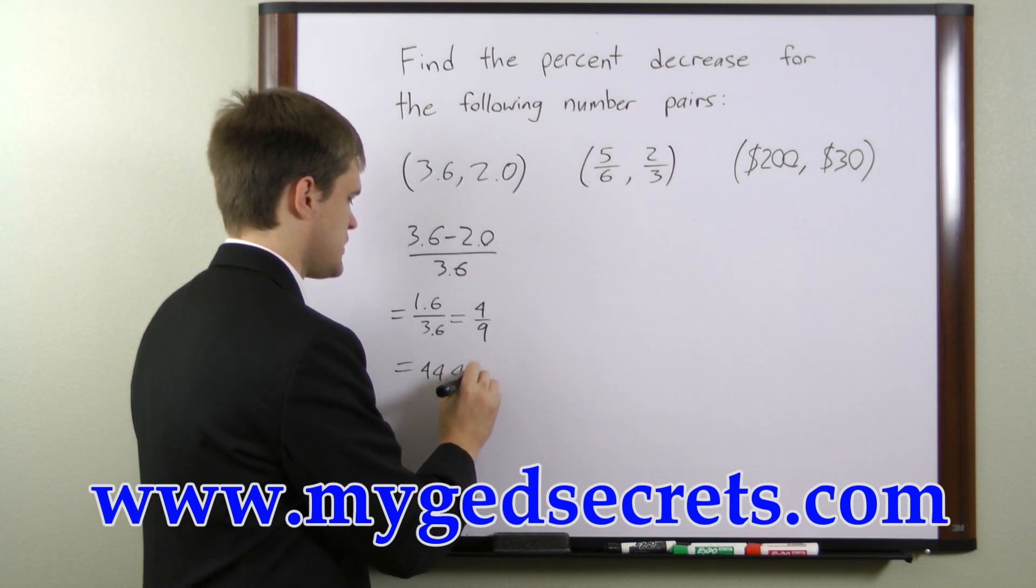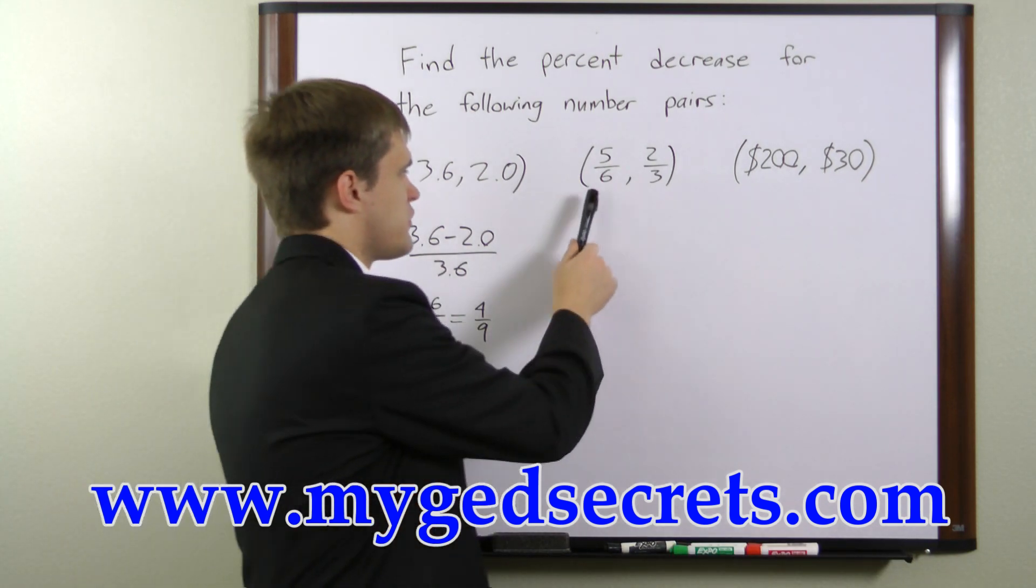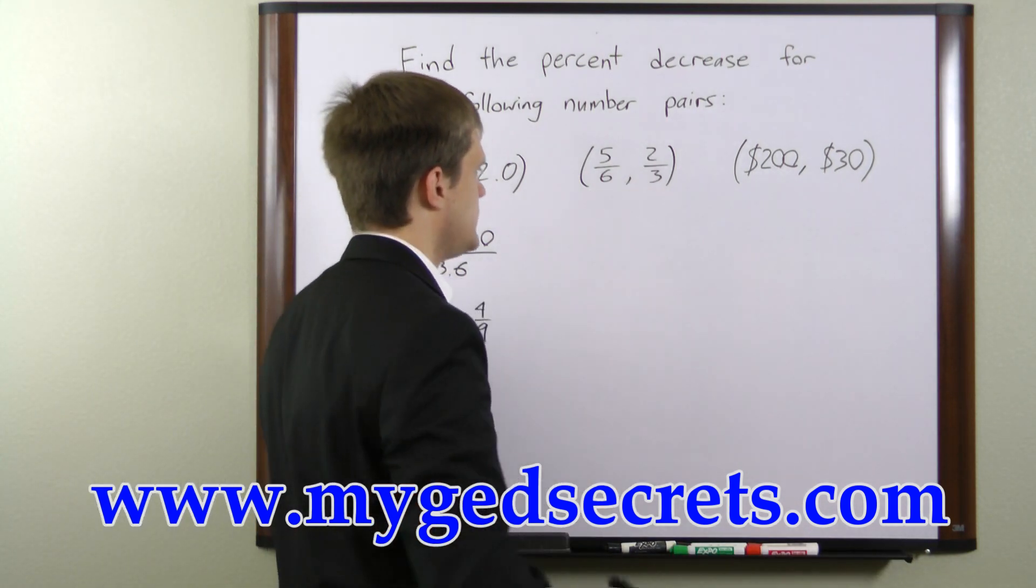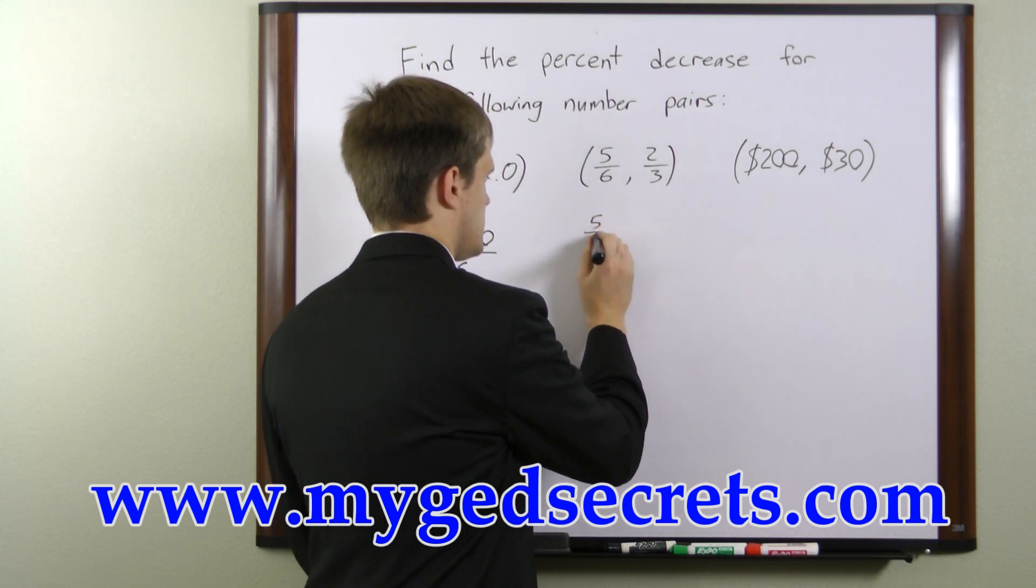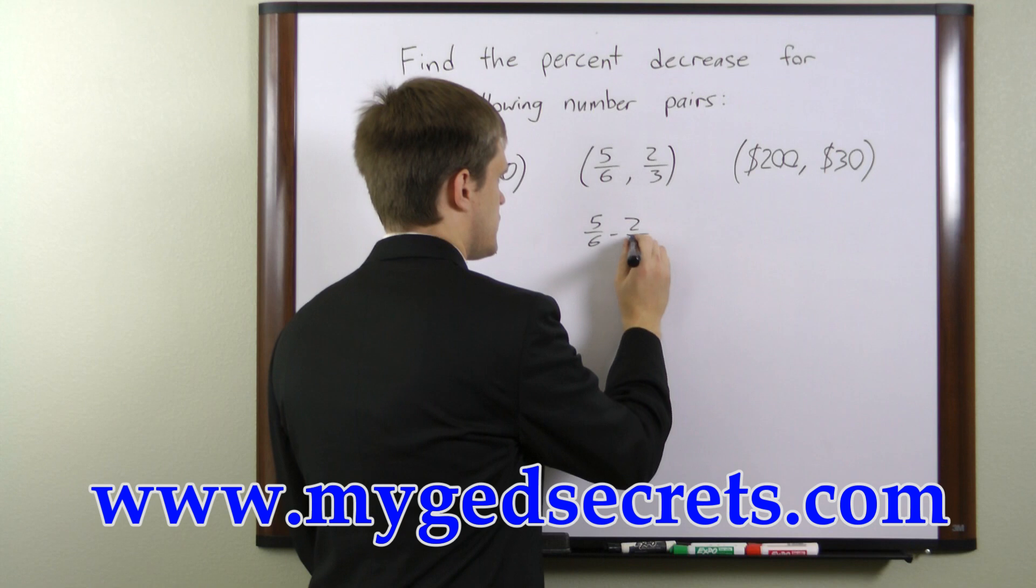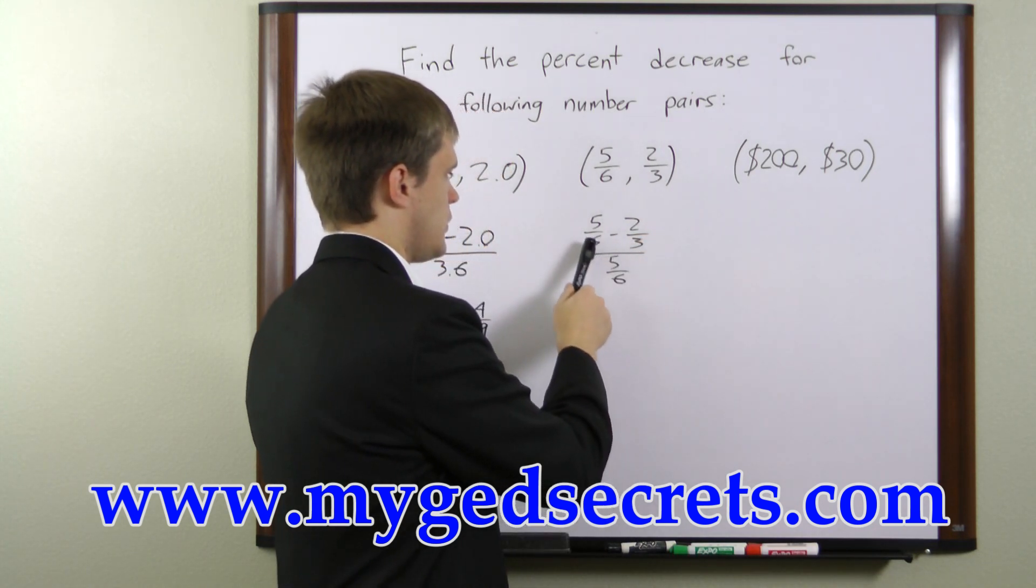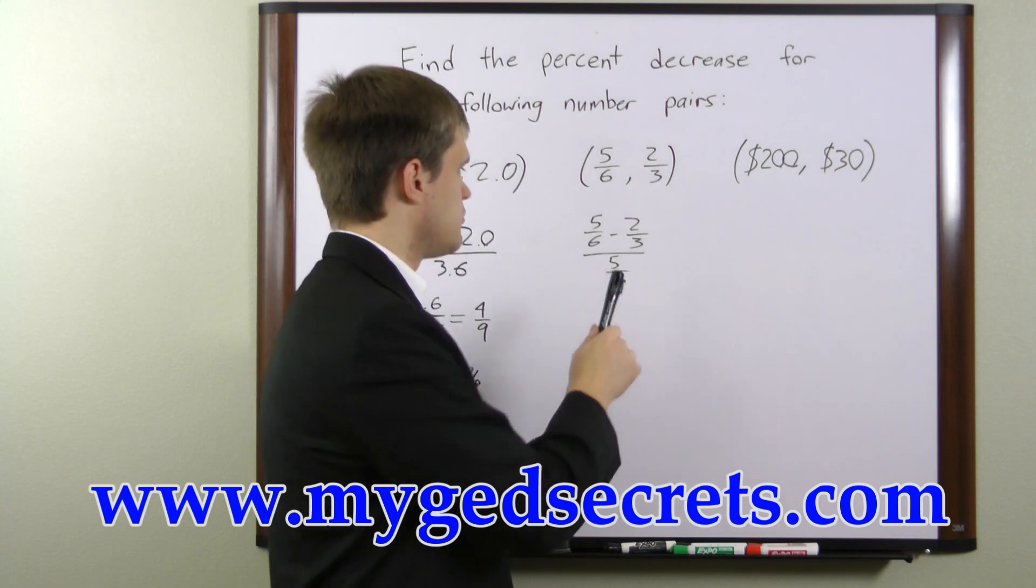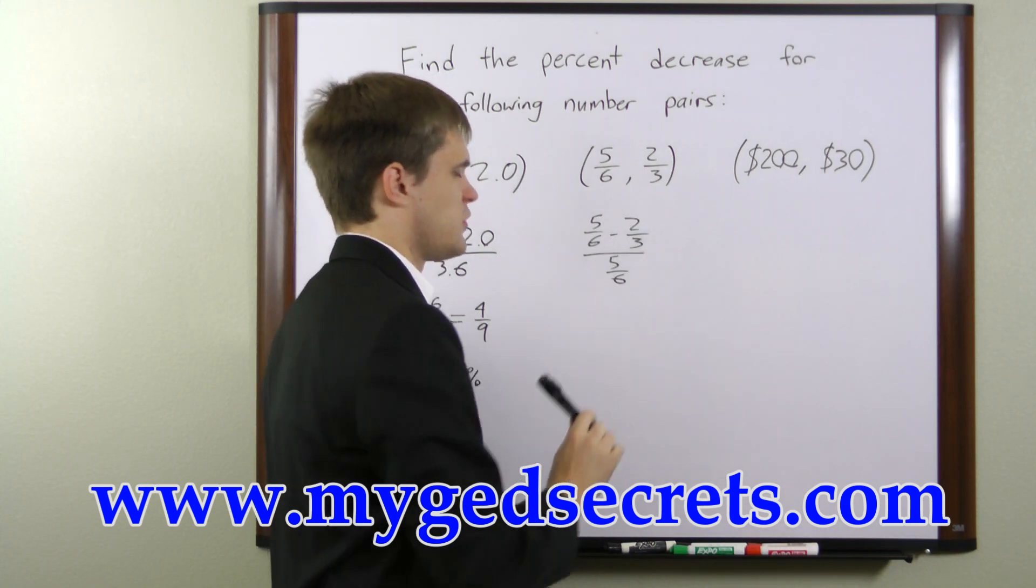In the second example we have 5 over 6 and 2 over 3. Once again we'll take the first number minus the second number over the first number. Now we don't have a common denominator yet, but we can convert the second number to a denominator of 6 and then we'll have it.